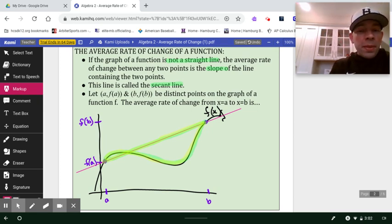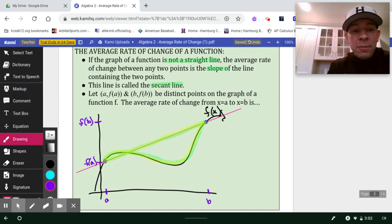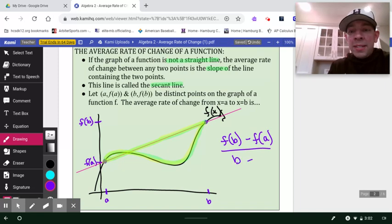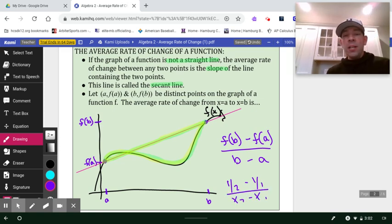So at the end of the day, the average rate of change is simply going to be f of b minus f of a, because that measures your vertical change or your rise, all over b minus a, which measures your run. It's the exact same thing as saying y sub 2 minus y sub 1 over x sub 2 minus x sub 1. We're just using slightly different notation, but the concept does remain the same.